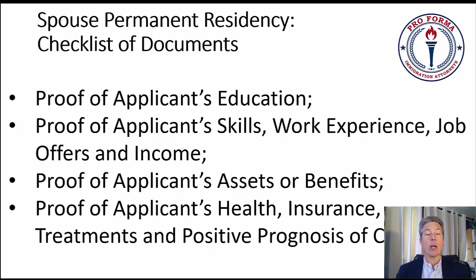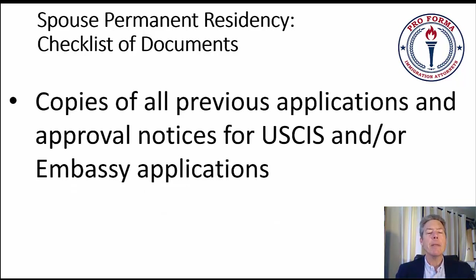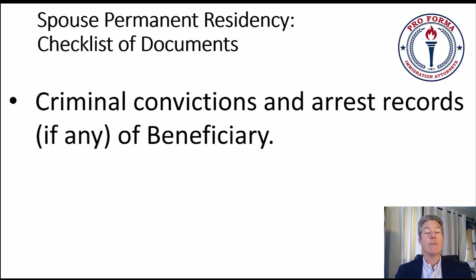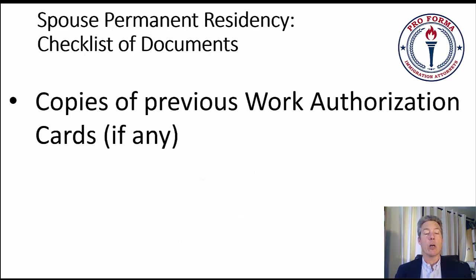If you've got bad health, showing where the treatments are is important for the self-sufficiency piece. Copies of all previous applications and approval notices for USCIS and/or embassy applications — you should have your history of immigration. Criminal convictions and arrest records, if any, of the beneficiary — criminal convictions are issued by a court of law, while arrest records are usually issued by a police or sheriff's department. Also criminal convictions and arrest records for the petitioner, the U.S. citizen — violent crimes might require a waiver in immigration law. Copies of previous work authorization cards, if any.